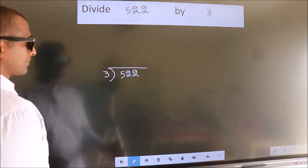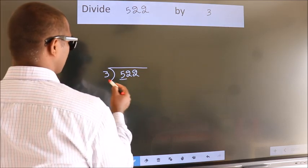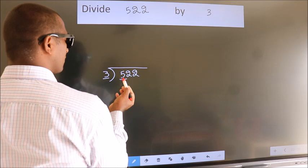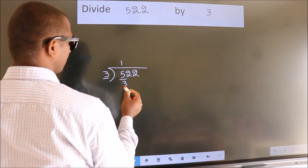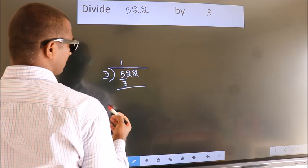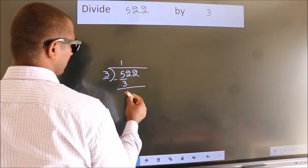Next. Here we have 5. Here 3. A number close to 5 in 3 table is 3 times 1 equals 3. Now we should subtract. We get 2.